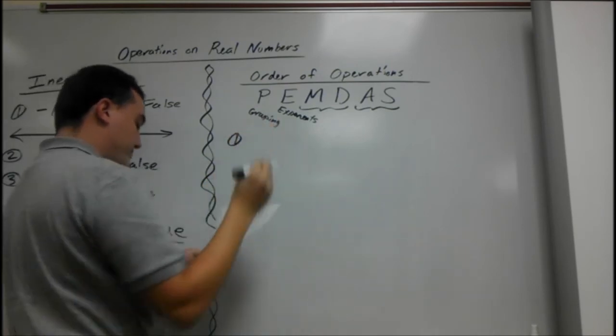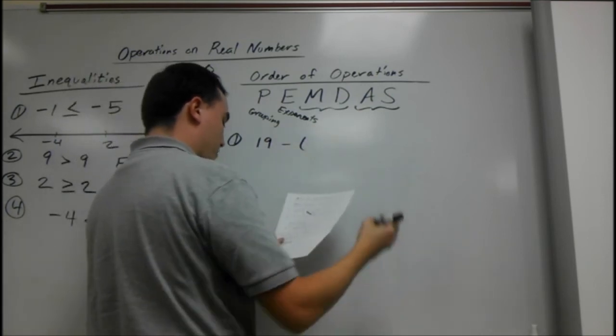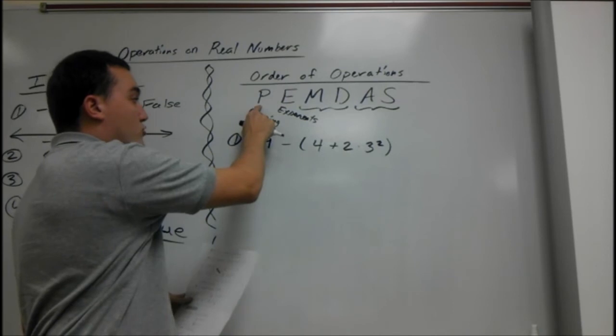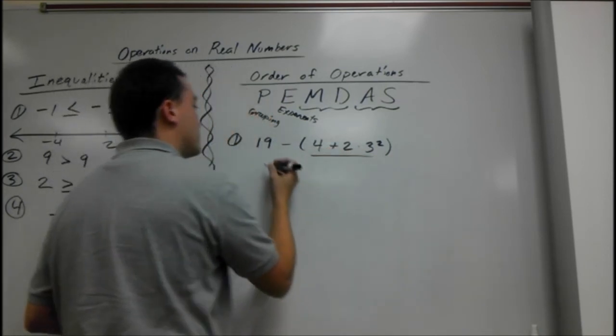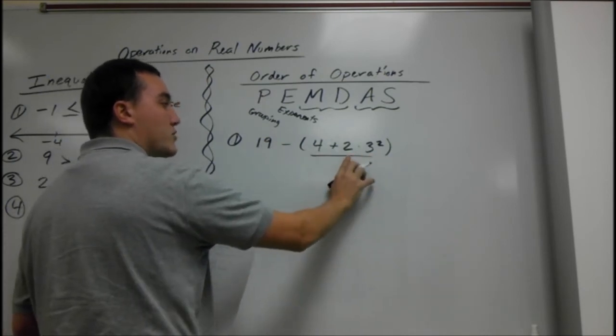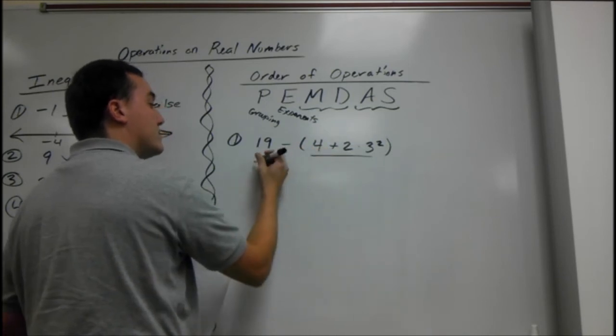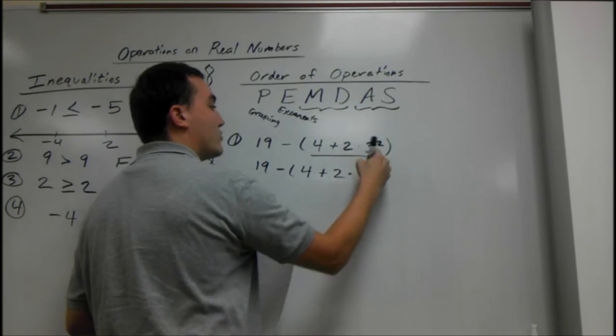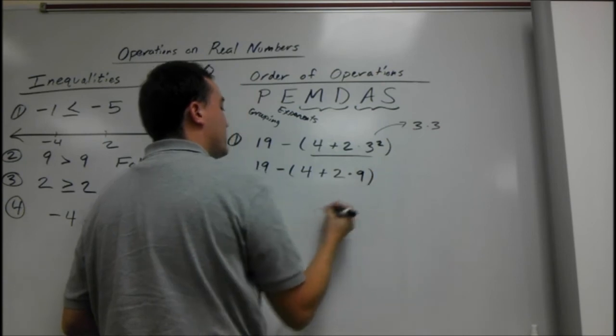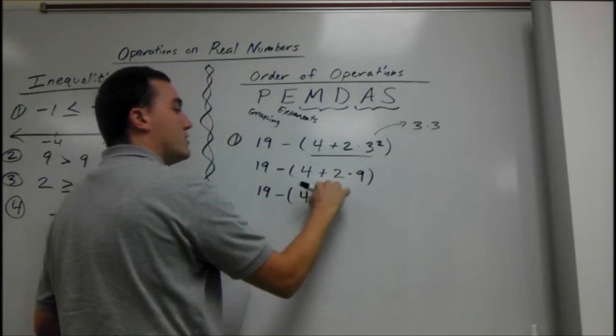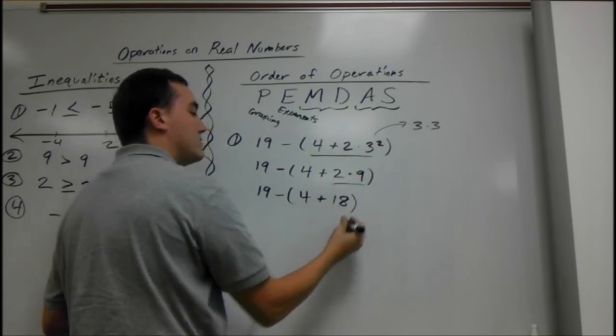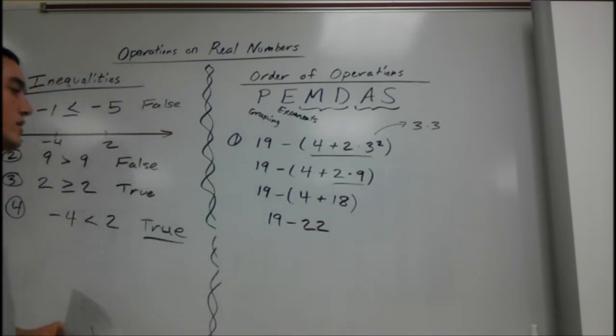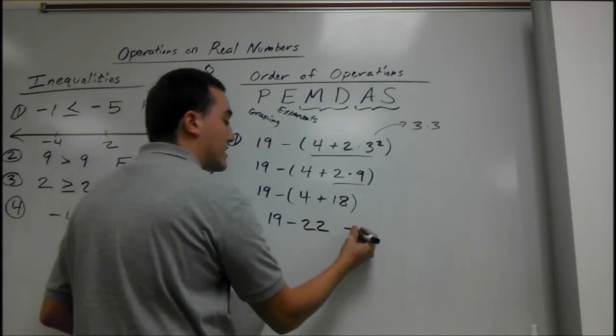Start out with something a little bit easier. Here, 19 minus 4 plus 2 times 3 squared. We have to do our grouping first, our parentheses. So everything in here has got to go first. And inside of that, we do exponents first, then multiply, then we can add it to the 4. So this 4 is last. We get 19 minus 4 plus 2 times 3 squared means 3 times 3. 3 times 3 is 9. So we get 19 minus 4 plus 2 times 9. 2 times 9 is next, which is 18. So we have 19 minus 4 and 18 is 22. And if you think about a real number line, we do have a smaller number minus a bigger number, so that's going to give us negative 3.